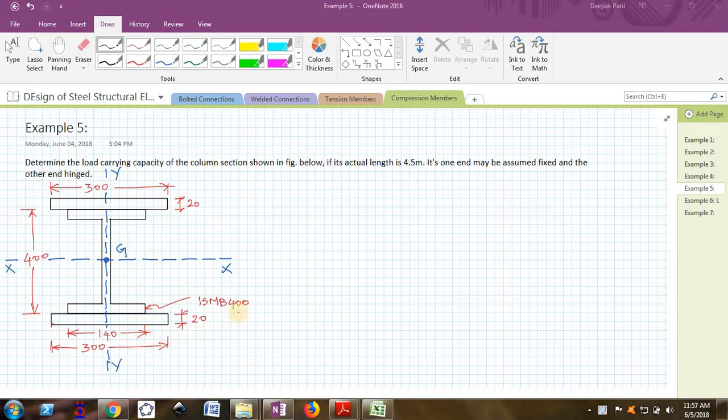A built-up column is one wherein we have used some standard shapes to make one column. Here we have used an ISMB 400 along with two plates, that is two flange plates of 300 by 20 mm, and now I need to find the design axial load capacity of this column as a whole.